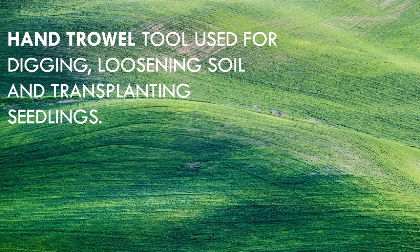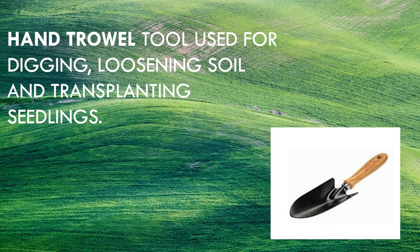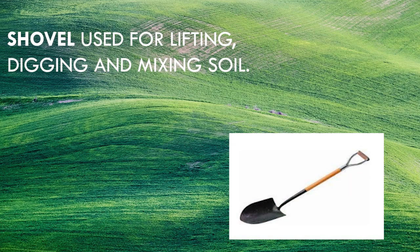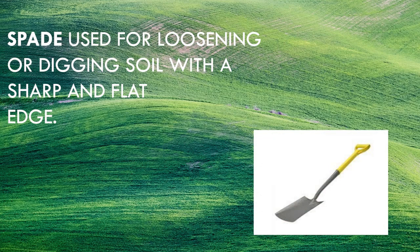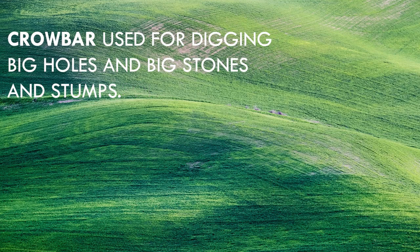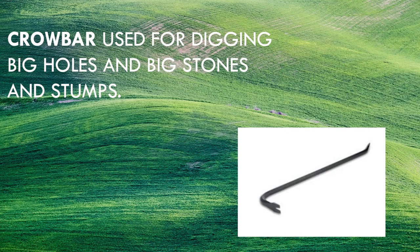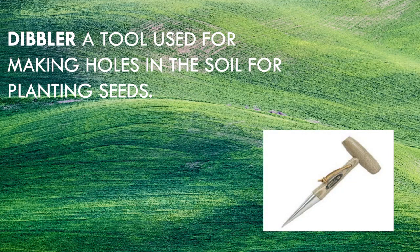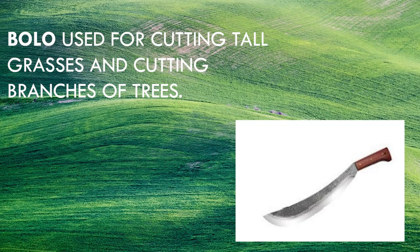Hand trowel: a tool used for digging, loosening soil, and transplanting seedlings. Spading fork: a tool with a long handle used for digging out root crops. Shovel: used for lifting, digging, and mixing soil. Spade: used for loosening or digging soil with a sharp and flat edge. Grub hoe: used for breaking hard topsoil and pulverizing soil. Crowbar: used for digging big holes and removing big stones and stumps. Peak mattock: a tool with a transverse blade head at one end and a pointed head at the other. Dibbler: a tool used for making holes in the soil for planting seeds. Bolo: used for cutting tall grasses and cutting branches of trees.